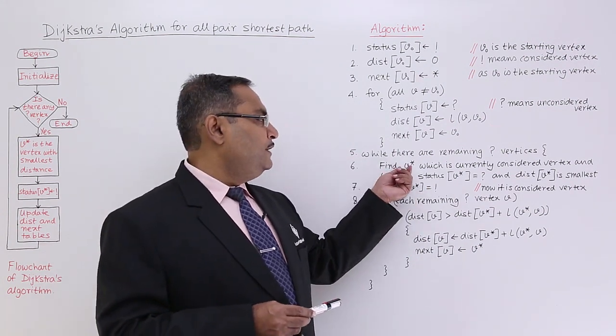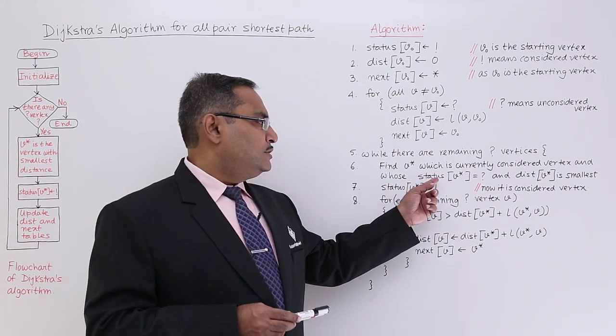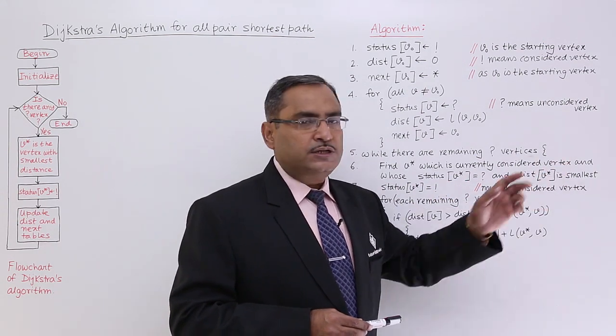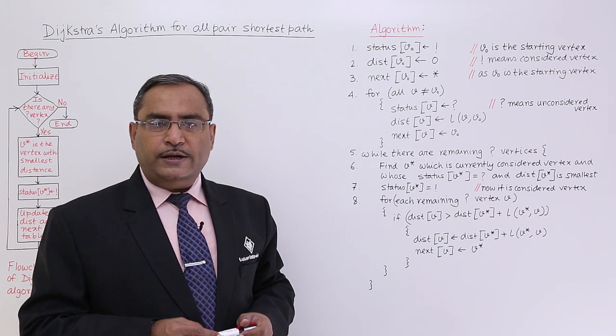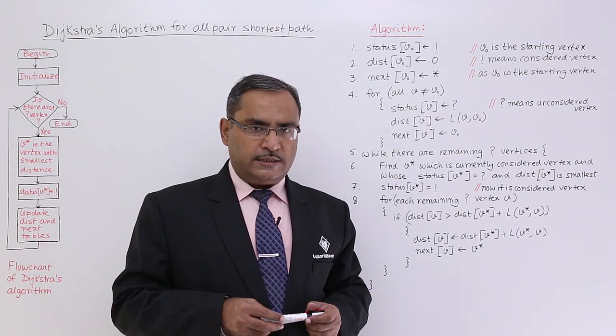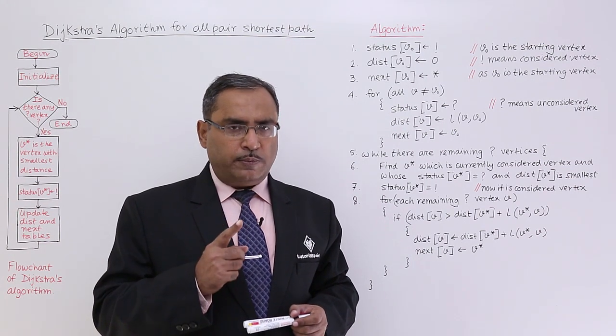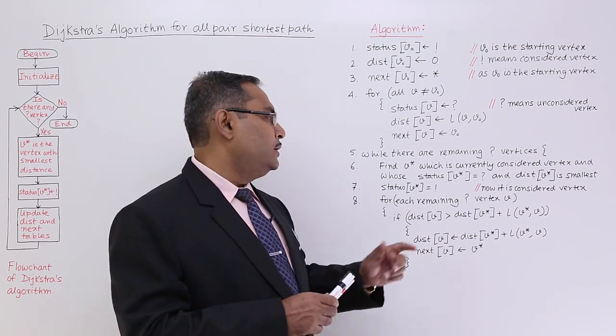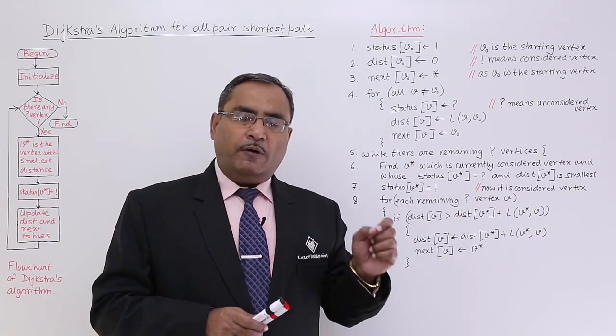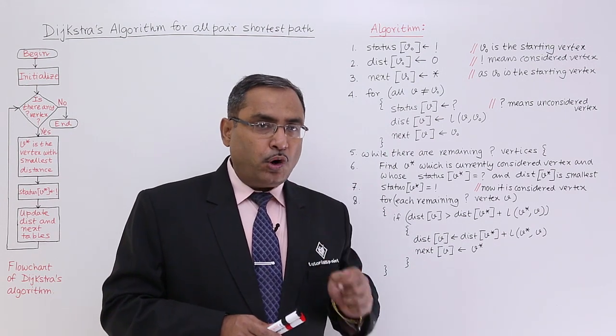So now find V star which is currently considered vertex and whose status V star is equal to question mark and dist of V star is smallest. So now I shall have to find out another vertex from the remaining unconsidered vertices and that vertex must be satisfying 2 conditions. Condition number 1, that should remain unconsidered, that means status of V star is equal to question mark, and the distance of that particular considered vertex denoted by V star will be the smallest one.